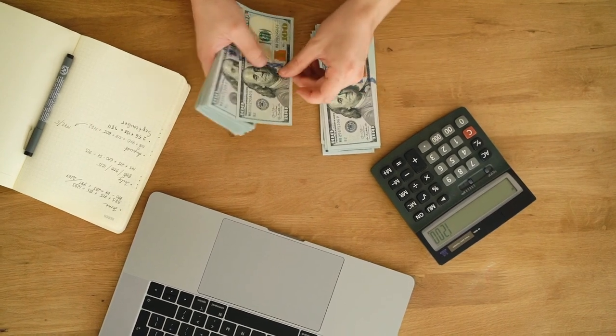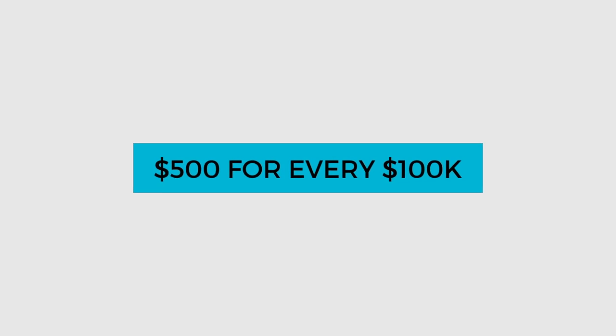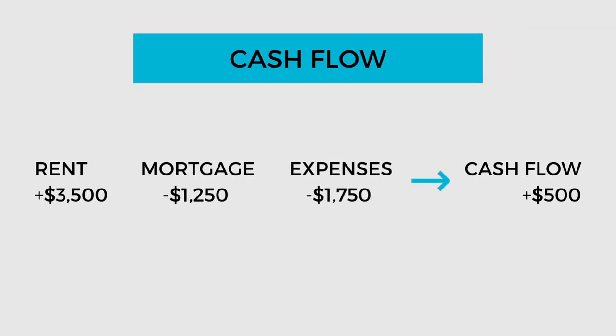At current mortgage rates — again using 3% interest and 25-year amortization — for every $100,000 of mortgage amount, you can expect to pay monthly principal and interest payments of approximately $500. So using our example with a $260,000 mortgage, we'd be looking at a mortgage payment of approximately $1,250 per month. So if we take our $3,500 a month in rent, apply 50% expenses, and minus our $1,250 mortgage payment, using these two quick hacks we can quickly figure out that our cashflow would be approximately $500 per month.